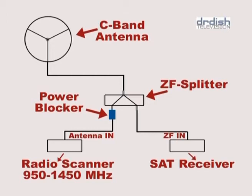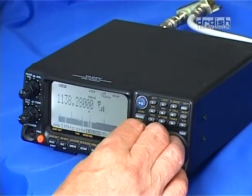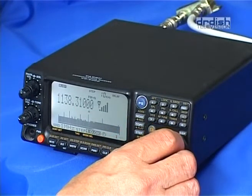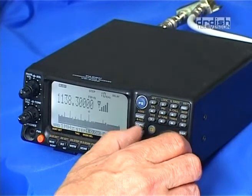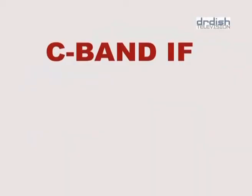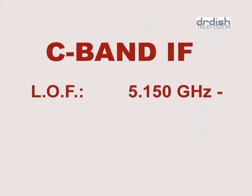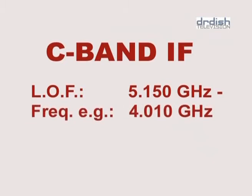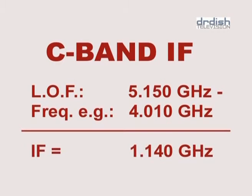The IF frequency of C-band is between 950 and 1450 MHz. When we find a valid frequency of an SCPC signal on 4.010 GHz, we need to figure out the corresponding IF. The local oscillator frequency of the C-band LMB is 5.150 GHz. We subtract the receiving frequency — in our case 4.010 GHz from 5.150 — and get, as a result, an IF of 1.040 GHz or 1040 MHz. And that's what we'll set the broadband receiver to.